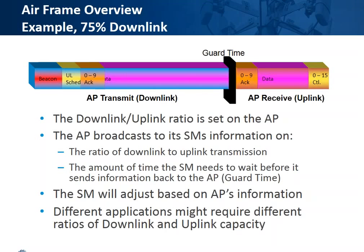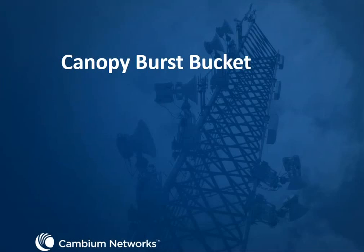In this last example for the airframe, the big thing is how it's flexible so we can change the percentages. By default it comes to 75% downlink, which means 75% of your frame is actually consisting of the data packets. The SM will adjust this based on the AP's information that it sends out in the scheduler.